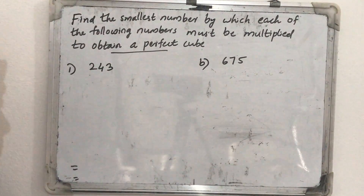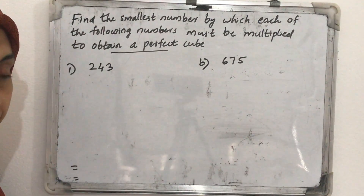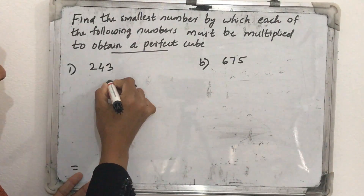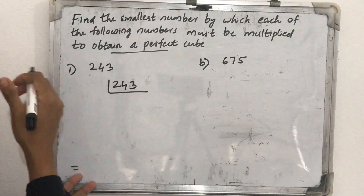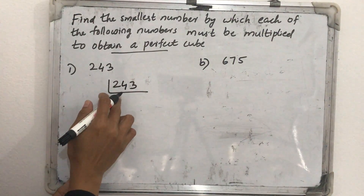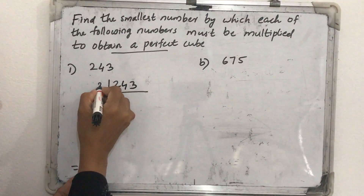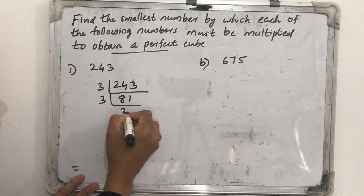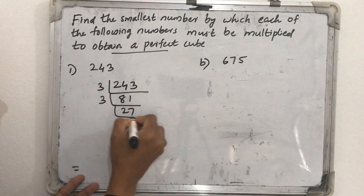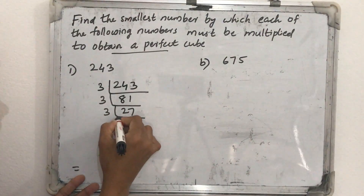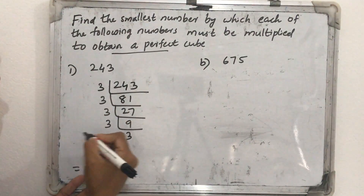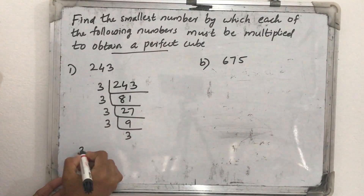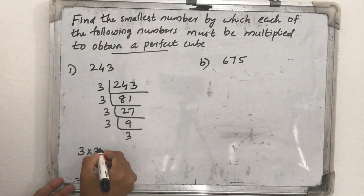For that, first we try to factorize the given number. When we factorize the given number, we can divide by 3: 243 divided by 3 is 81, by 3 is 27, by 3 is 9, by 3 is 3. So when we write the prime factorization, how many 3s are there?